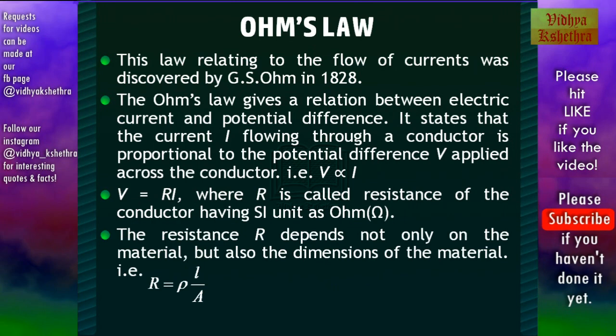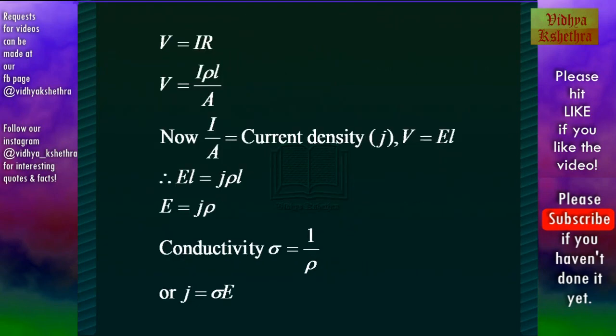The resistance R depends not only on the material but also on the dimensions of the material. It can be found that the resistance is equal to ρL/A, where ρ is the resistivity of the material, L is the length of the material, and A is the area of cross section.